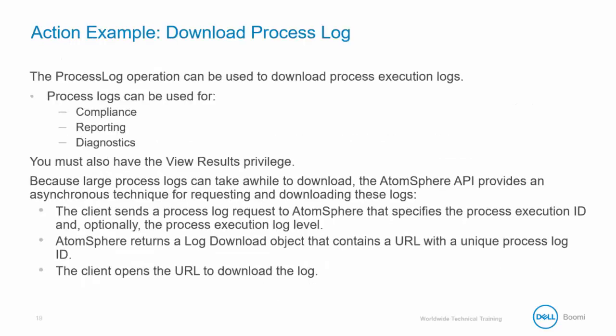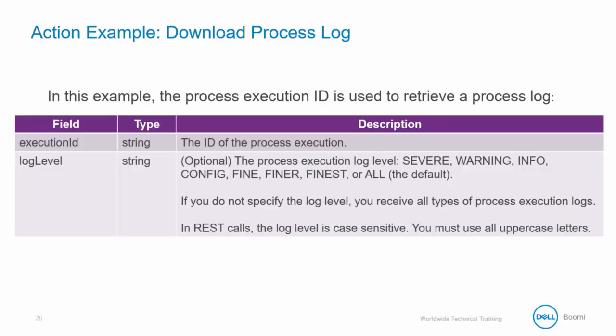Let's use download process log as an example to look at these actions. The process log operation can be used to download process execution logs, which can be used for compliance, reporting, or diagnostics. You must have the view results privilege enabled on your account. Because large process logs can take quite a while to download, the AtomSphere API provides an asynchronous technique for requesting and downloading these logs. The client sends a process log request specifying the process execution ID and, optionally, the log level. AtomSphere then returns a log download object containing a URL with a unique process log ID, and the client opens that URL to download the log. The execution ID retrieves the specific log, and you can apply an optional filter for the log level.